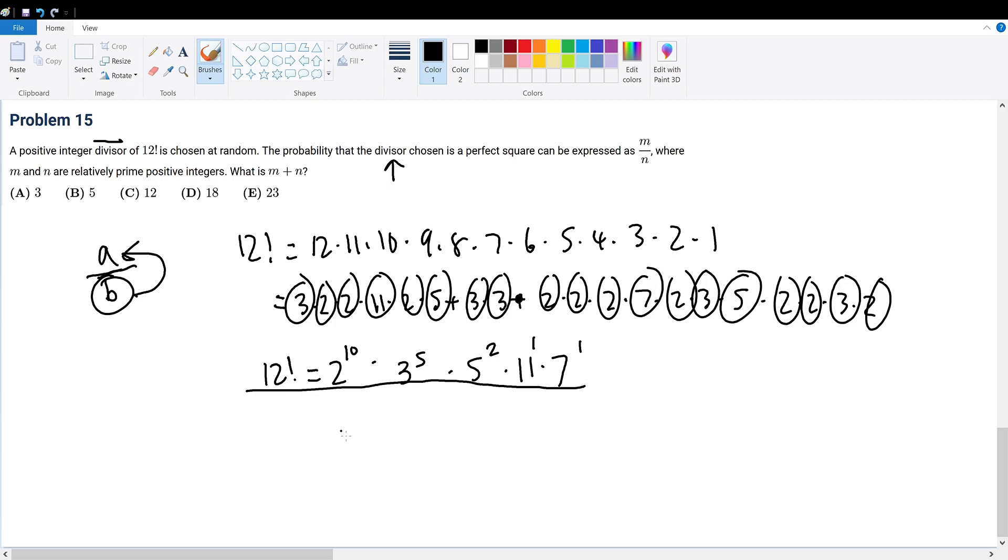To find out the number of divisors given its prime factorization, we simply increment each of the respective exponents. So 10 becomes 11, 5 becomes 6, 2 becomes 3, 1 becomes 2, and 1 again becomes 2, and we multiply them all together. This will give us the number of divisors for 12 factorial. That is a very cool trick that you can apply to any other number.